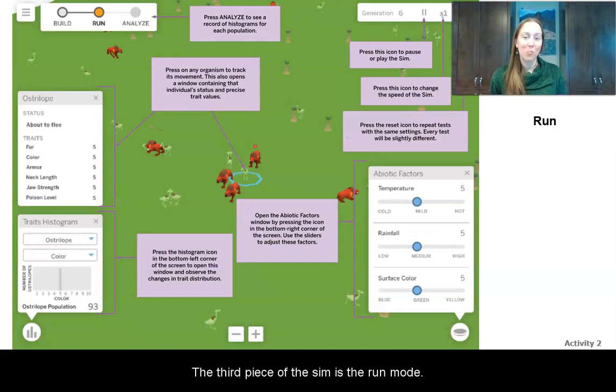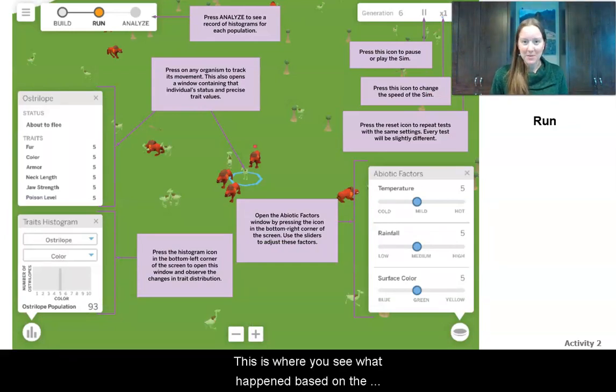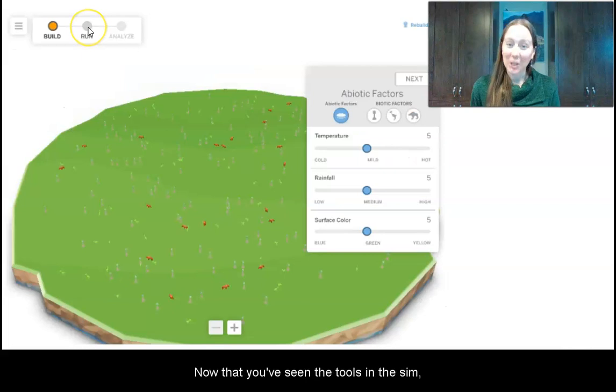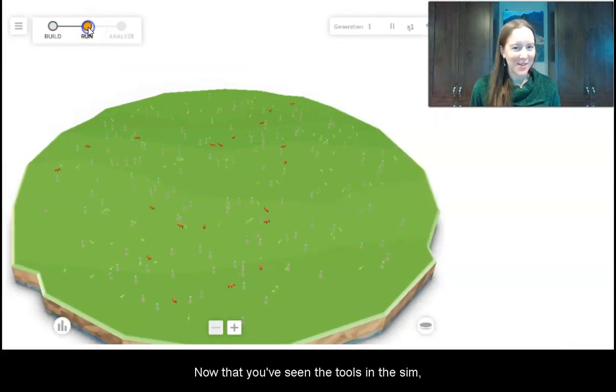The third piece to the sim is the run mode. This is where you see what happens based on the environment that you set up. And the final step is the analyze phase. This is where you look at your populations and their different traits and you can see how they changed over time as well. Now you've seen the tools in the sim. Let's try it out.